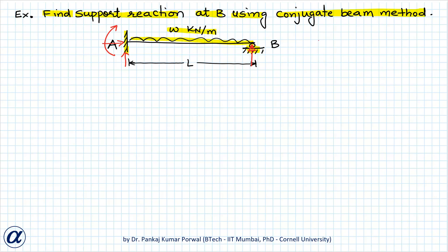The total number of unknown reactions for this beam is 4, and because we have only one beam segment, there will be only one free body diagram, giving us 3 equilibrium equations. So 4 minus 3 equals 1, which is the degree of static indeterminacy, and since it is greater than 0, the structure is statically indeterminate.